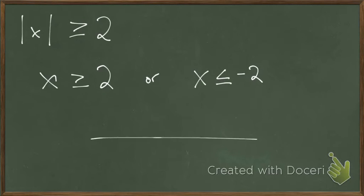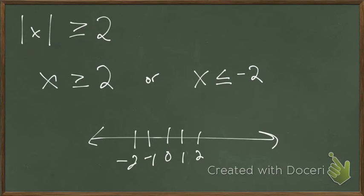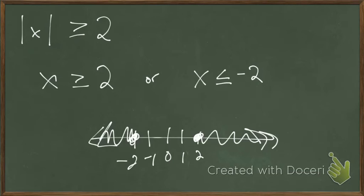On the number line, the greater-than situation cuts out all numbers between 2 and negative 2 — those would be less. So lean on testing what answers work and what don't; it helps you build your two inequalities.